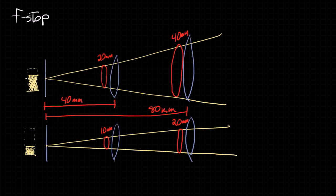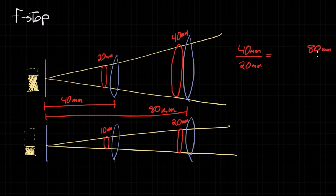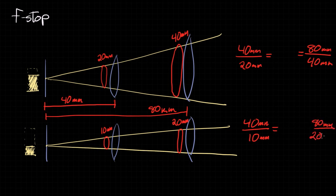In order to really think about the amount of light coming in, we also need to think about the focal length as well as the size of the aperture. So a 40 millimeter focal length with a 20 millimeter aperture lets in the same amount of light as an 80 millimeter focal length with a 40 millimeter aperture. Likewise, a 40 millimeter focal length with a 10 millimeter aperture lets in the same amount of light as an 80 millimeter focal length with a 20 millimeter aperture.